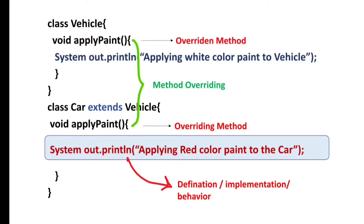If you want to overwrite the parent class method in a child class, you must follow some rules. But before that, let's discuss the purpose of method overriding. Method overriding means to modify the parent class method in the child class as per the child class requirement. The question is: why do we need to overwrite the parent class method — why not just create a new method in the child class instead of overriding it?